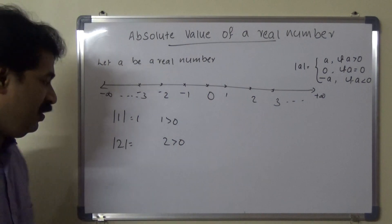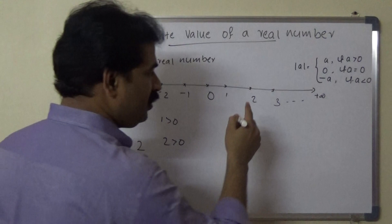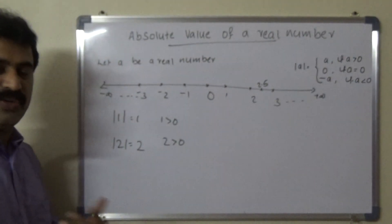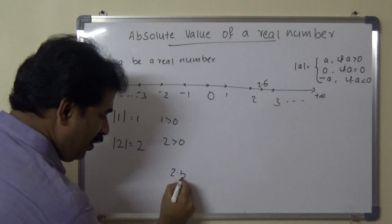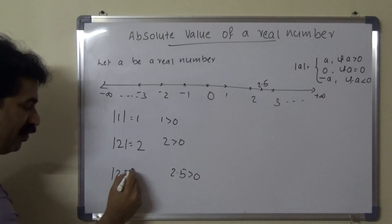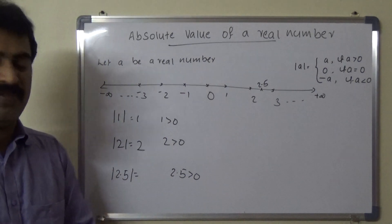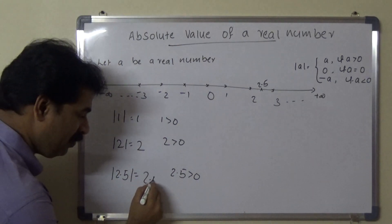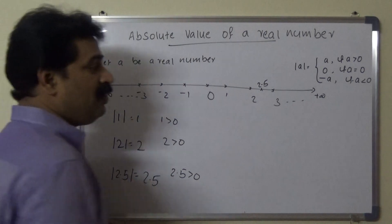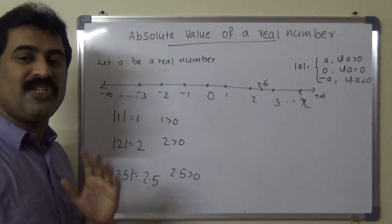Next, 2 is a positive real number, so the absolute value of 2 means the distance between 0 and 2, which equals 2. Similarly, 2.5 is also a positive real number, so the absolute value of 2.5 is the distance between 0 and 2.5, which equals 2.5.